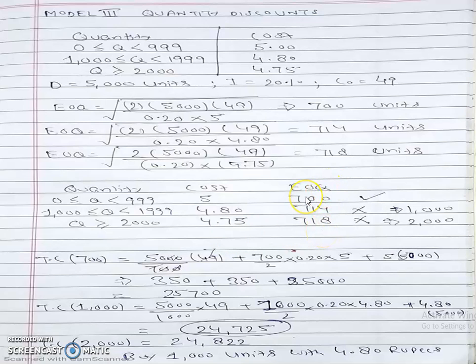For the first part, EOQ is 700 units. The order quantity range is 0 to 999, so 700 lies within these values, which is okay. For the second part, EOQ is 714, but the order quantity range is 1,000 to 1,999, so this EOQ will be cancelled.